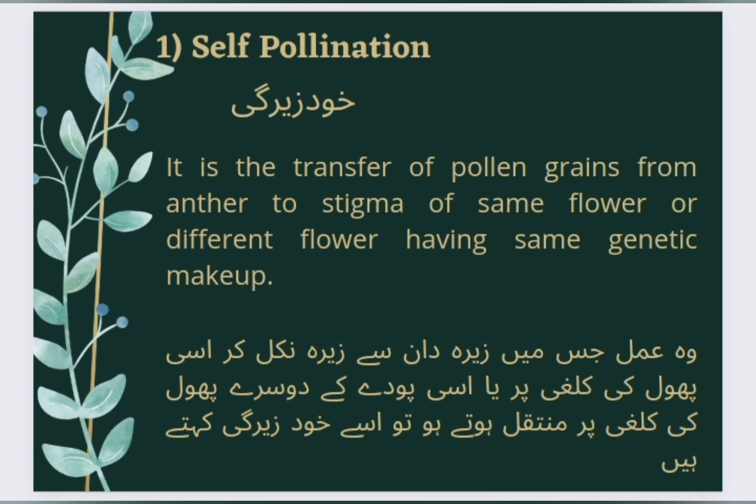Self-Pollination (Khud-Zeergی): It is the transfer of pollen grains from the anther to the stigma of the same flower, or a different flower having the same genetic makeup. وہ عمل جس میں جیرے دان سے جیرے نکل کر اسی پھول کی کلغی پر یا اسی پودے کے دوسرے پھول کی کلغی پر منتقل ہوں، اسے خود جیرگی کہتے ہیں۔